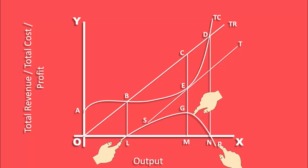Profit increases and then decreases. Only at output M, profit is maximum. The producer is in equilibrium.